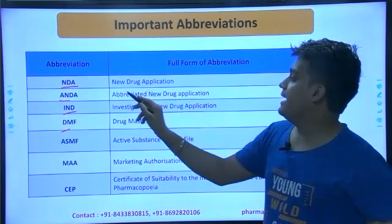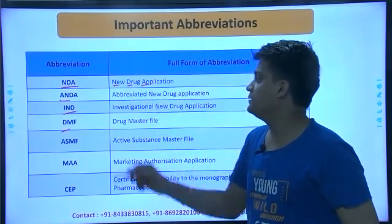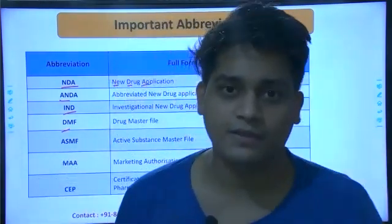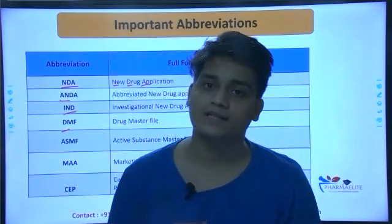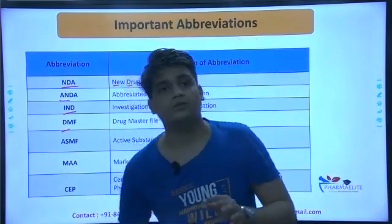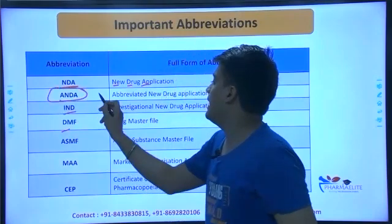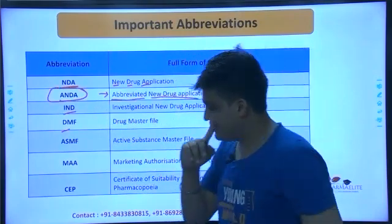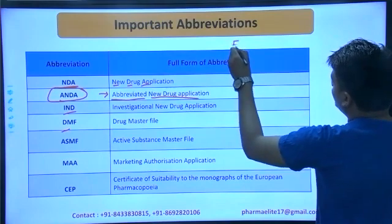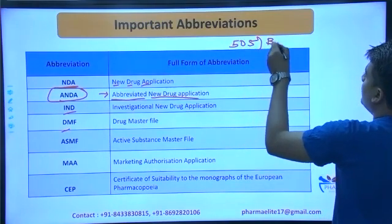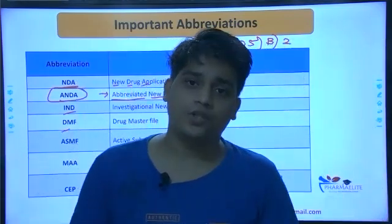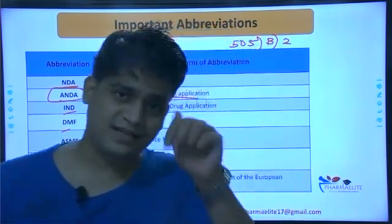Talking over here: NDA stands for New Drug Application. For example, Favipiravir was a new drug, Remdesivir was a new drug — but hydroxychloroquine or Ivermectin are not new drugs, so they are not part of NDA. The other thing is ANDA, which is Abbreviated New Drug Application. If you have a question about what 505B2 means, this is a regulatory filing product concept. Coming back, ANDA is the Abbreviated New Drug Application. IND — Investigational New Drug Application. DMF — Drug Master File. ASMF is mainly for APIs — Active Substance Master File. If you wish to learn more regulatory concepts, just type it in the chat box below.